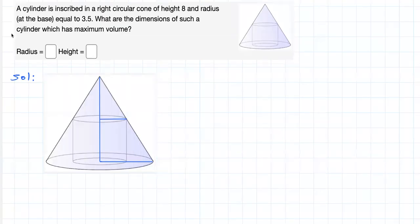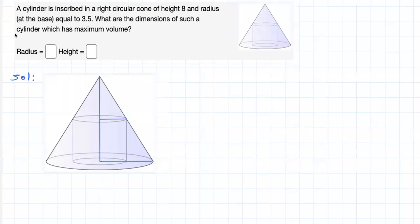Hello guys, I'm back here to help you become better problem solvers. Let's do this problem together. A cylinder is inscribed in a right circular cone of height 8 and radius equal to 3.5. What are the dimensions of such a cylinder which has maximum volume?